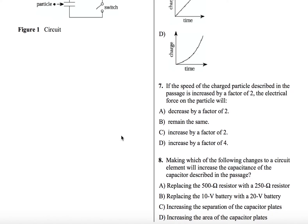Number seven. If the speed of the charged particle described in the passage is increased by a factor of two, the electric force on the particle will what? So when you read this question, especially in physics, you want to be thinking in terms of equations. And especially when we're doing electricity and magnetism, because these concepts are really not that intuitive. So mechanics, maybe you don't have to think entirely in equations, but for E and M, I don't know how you conceptually know how these things work.